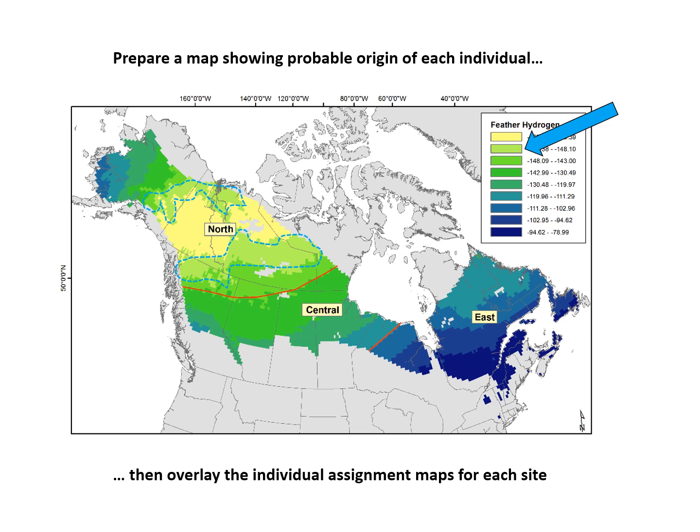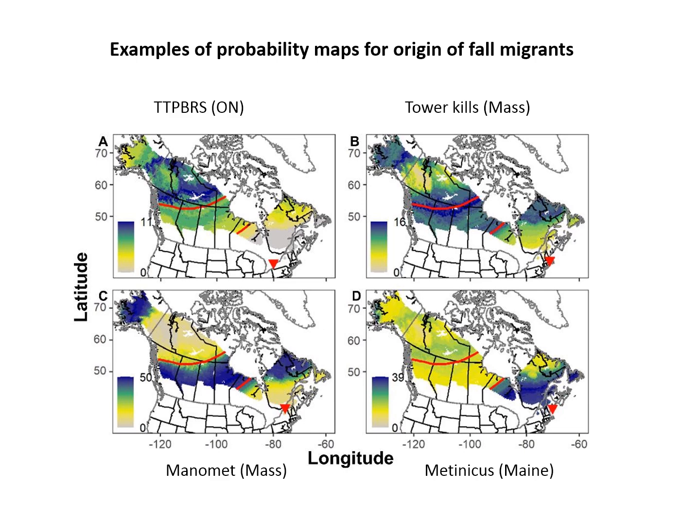The areas where that bird could have come from are two blotches on the map surrounded by dashed blue lines next to the yellow area — a very broad region. You then take all the birds from one particular site and overlay these maps of individuals to see what the most likely region is for the bulk of birds coming from that location.